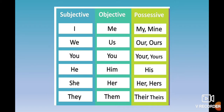Let's check every type of pronoun. Here is a little chart with subjective, objective, and possessive columns. For example: 'I' is subjective, 'me' is objective, and 'my' and 'mine' are possessive pronouns. 'We' is subjective, 'us' is objective, and 'our' and 'ours' are possessive pronouns.